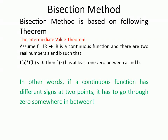Today we are going to see the explanation of the bisection method. The bisection method is based upon the Intermediate Value Theorem, which says that if the function is continuous, there must be two real roots a and b such that f(a) multiplied by f(b) is less than zero — meaning there must be at least one root which lies between a and b, where the function crosses zero. In other words, if a continuous function has different signs at two points, it has to go through zero somewhere in between a and b.